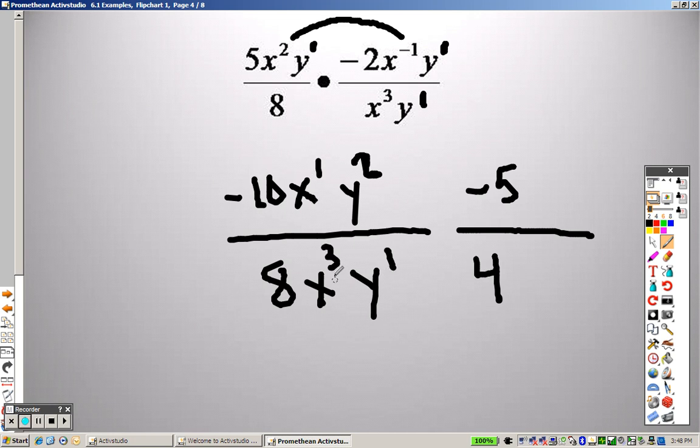x's. Which one's bigger? Well, the bottom is. So I know my x's are going to go on the bottom, right? 1 minus 3 is negative 2. So it is a positive 2 on the bottom. Look at the y's. Which one's bigger? This 2 is bigger, the exponent.